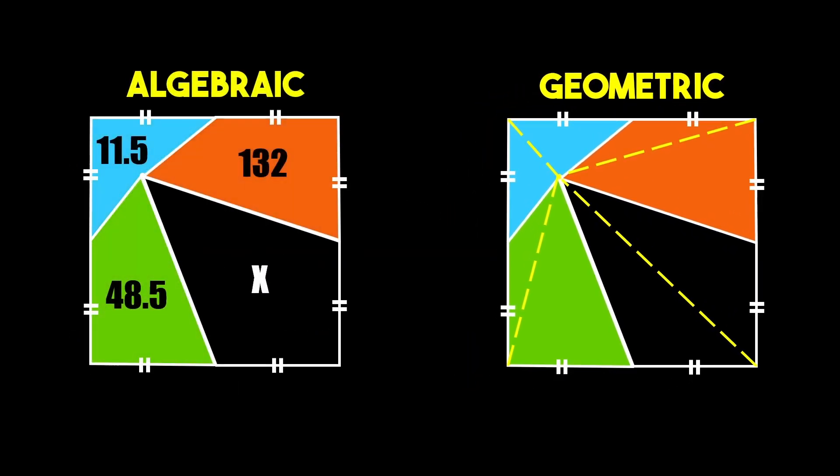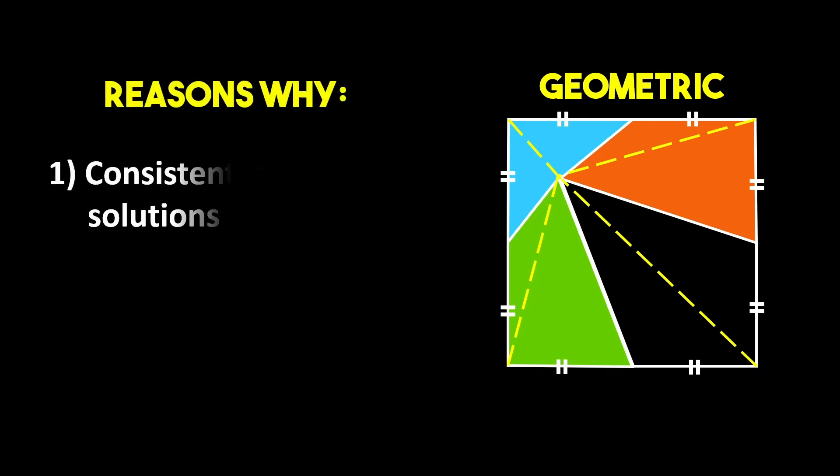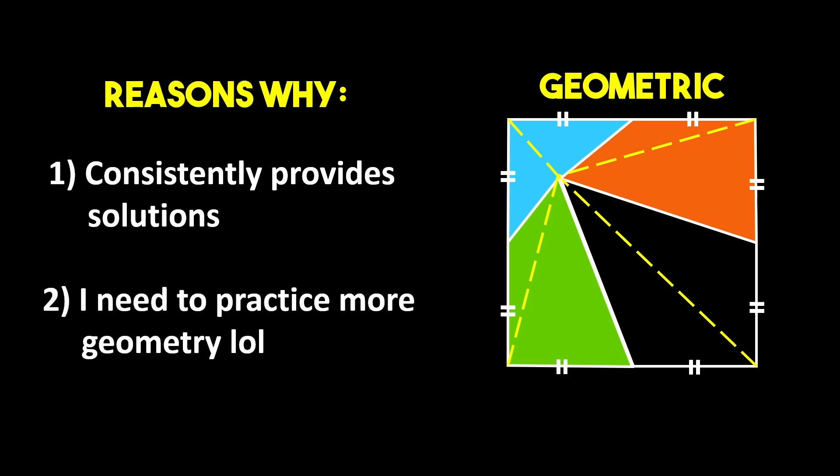If you want my personal opinion I'd have to go with the geometric solution for two main reasons. One you can't really beat its reliability. Even if the algebraic method is faster in some cases, the ability of the geometric method to always give an answer outweighs that speed. And two, geometry is actually one of my weaker areas of math and if I want to get better at it I'll have to practice it.